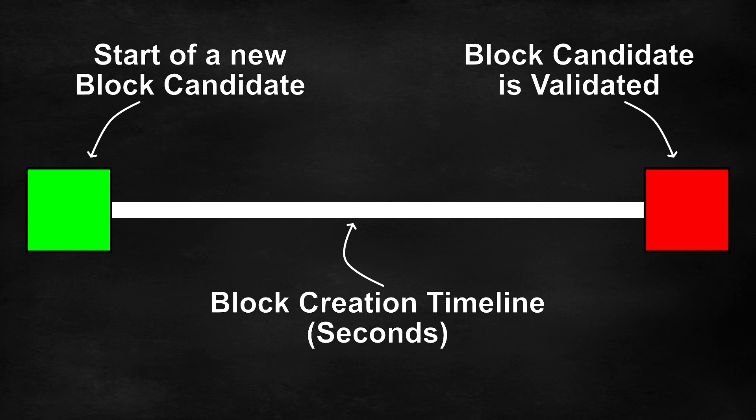And the red square represents the end of the process where the block of transactions is validated by the miner or by the validator, depending on the consensus method of the blockchain.